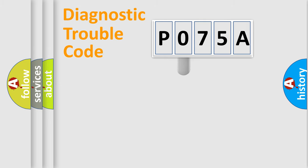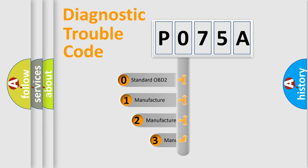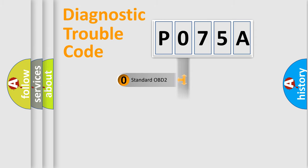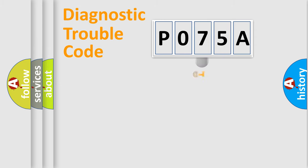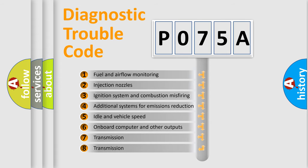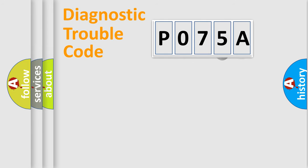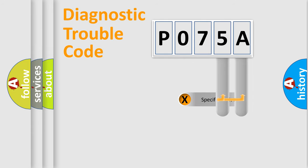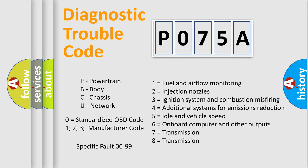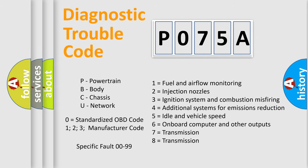This distribution is defined in the first character of the code. If the second character is expressed as 0, it is a standardized error. In the case of numbers 1, 2, or 3, it is a manufacturer-specific error. The third character specifies a subset of errors. The distribution shown is valid only for the standardized DTC code. Only the last two characters define the specific fault of the group — but remember, this division applies only when the second character code is 0.